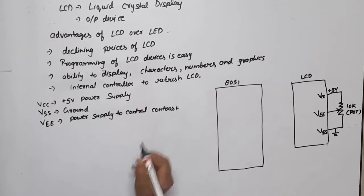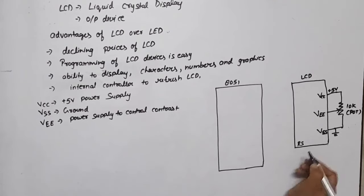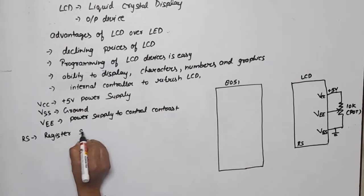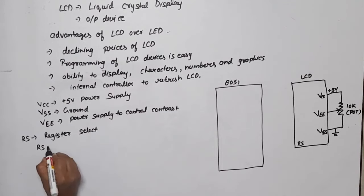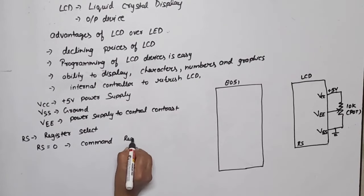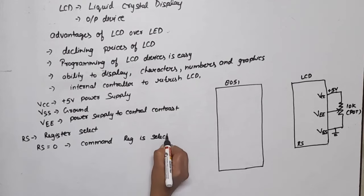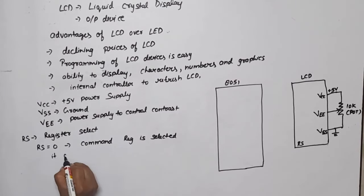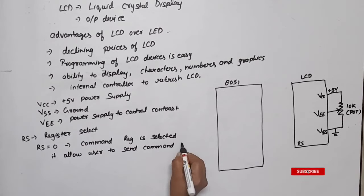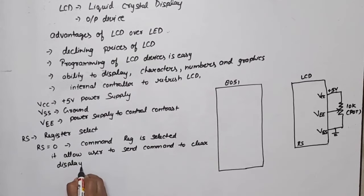Now next pin is RS. RS is Register Select. This is used to select internal register of LCD. If RS equals 0, then command register is selected. If command register is selected, it allows user to send commands to clear display, or move cursor, cursor at home, etc.